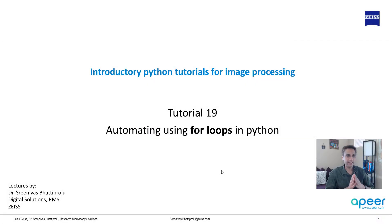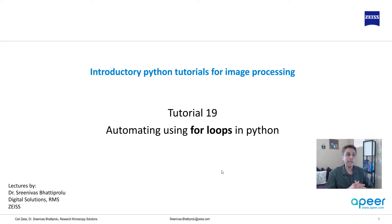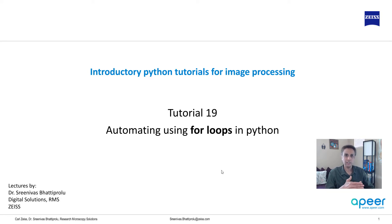Welcome to tutorial 19 of the introductory Python for image processing tutorial series. In this tutorial I'm going to talk about for loops. In the previous tutorial we covered while loops, which loop through a piece of code while a certain condition holds true. For loops are going to loop through typically a bunch of numbers or values in a list — for each item in a list or in a string, do certain computation.